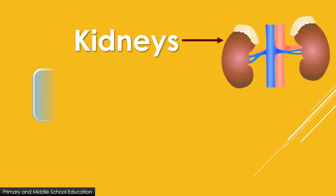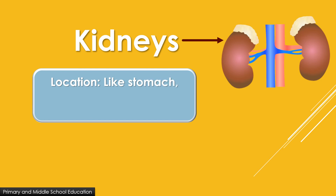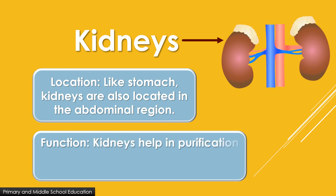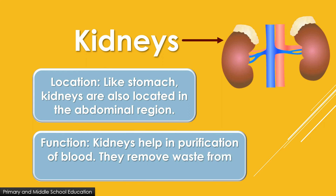Like the stomach, kidneys are also located in the abdominal region. Functions of the kidneys: kidneys help in purification of blood. They remove waste from our body in the form of urine.